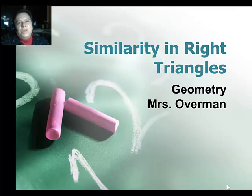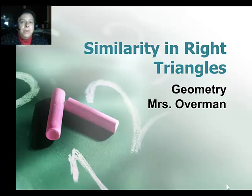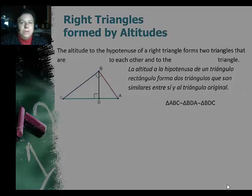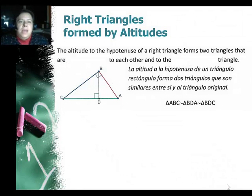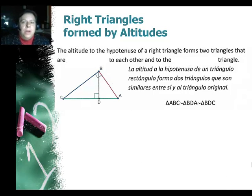In this lesson we're looking at similarity in right triangles, primarily the similarity created by altitudes. These are the right triangles formed by altitudes. The altitude to the hypotenuse of a right triangle forms two triangles. Here's the right triangle, turned so the hypotenuse is on the bottom.